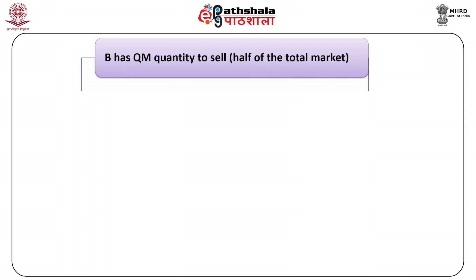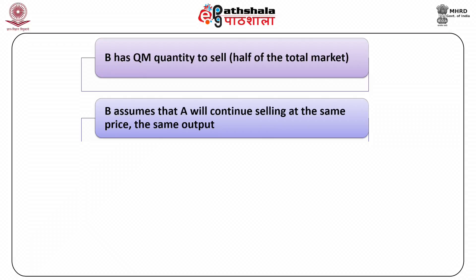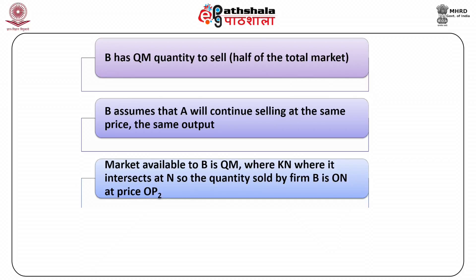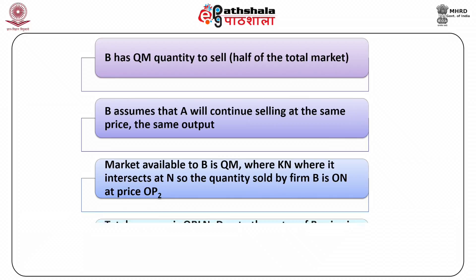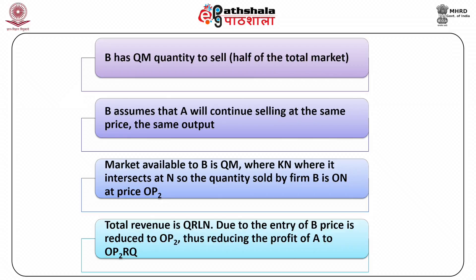Firm B has QM quantity to sell — half of the total market. B assumes that A will continue selling at the same price and the same output. Thus, the market available to B is QM where KN intersects at N. So the quantity sold by firm B is ON at price OP2. The total revenue is QRLN. Due to the entry of B, price is reduced to OP2, thus reducing the profit of A to OP2RQ.